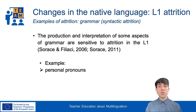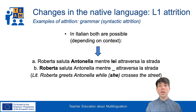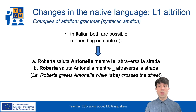Turning to grammatical changes in the first language — that is, syntactic attrition — these are likely to be noticed in very specific contexts. Some examples of syntactic attrition have been reported in the interpretation and production of personal pronouns. Let's take two examples from Italian. Both options are possible in Italian: A — 'Roberta saluta Antonella mentre lei attraversa la strada,' and B — 'Roberta saluta Antonella mentre attraversa la strada.'